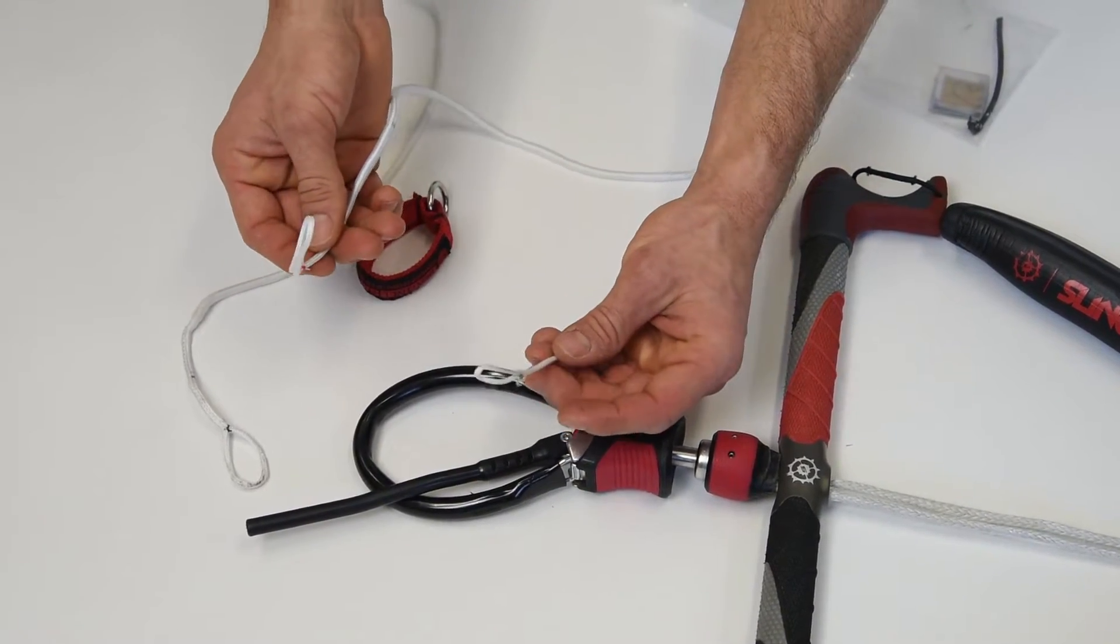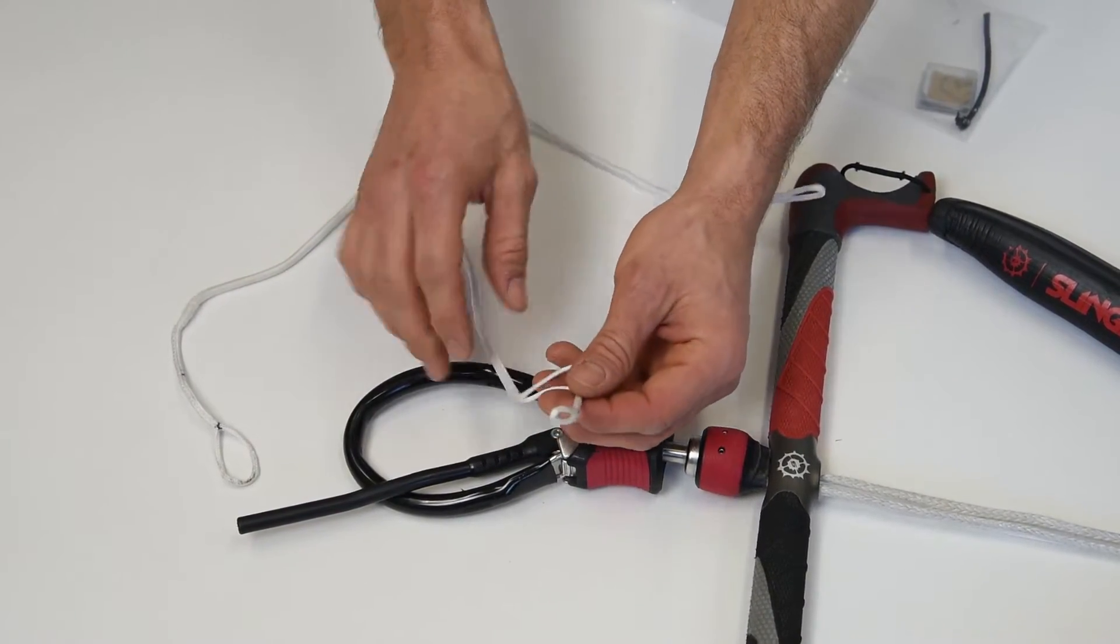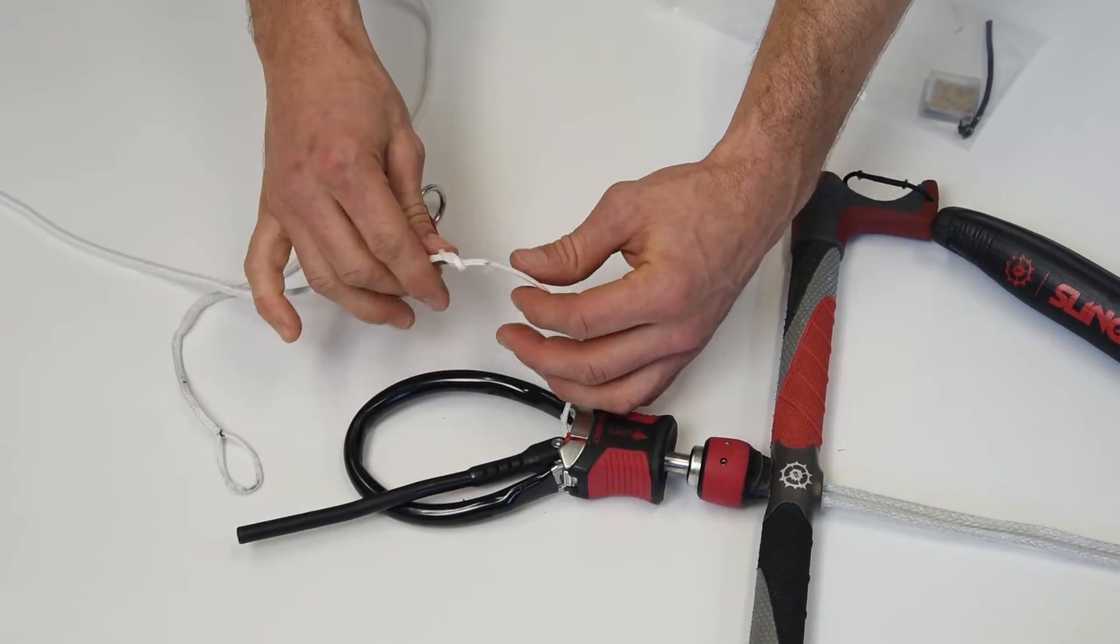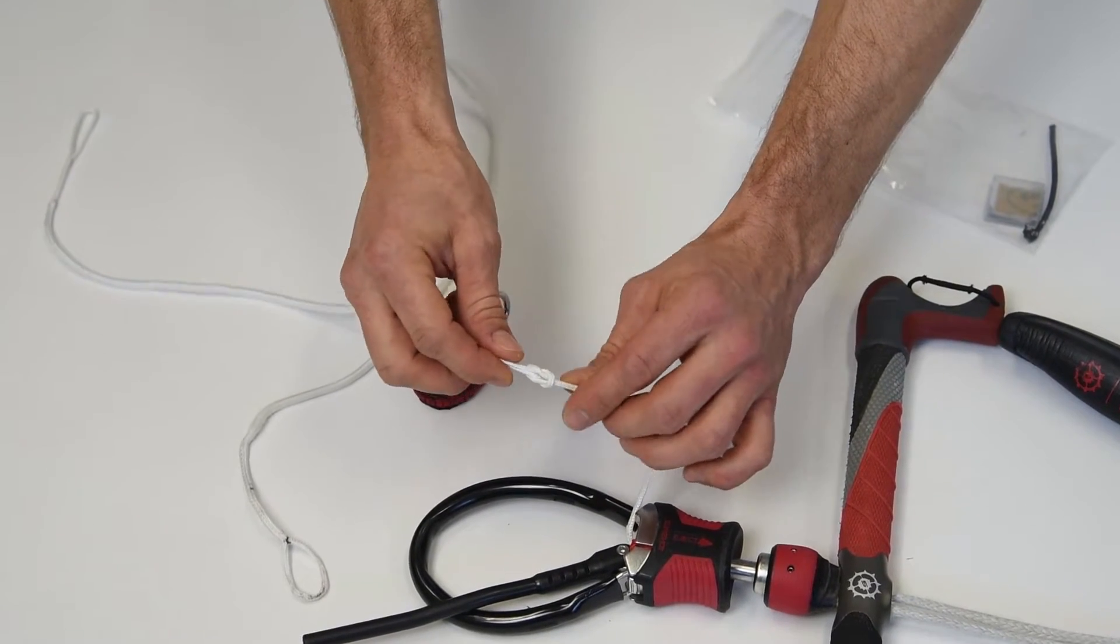Reattach the new bungee to the center line as shown here. It is very important that there are no twists in the knot when you pull it tightly as this knot must be small enough to slide through your safety system.